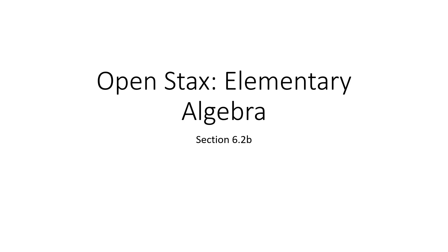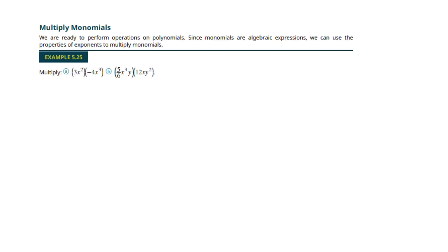We are now going to begin working on multiplication. We're only going to multiply monomials in this section. Remember what a monomial was — it was just one group. So we're multiplying groups of one together. And now we're going to need our exponent rules.